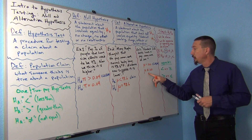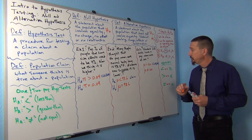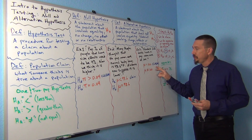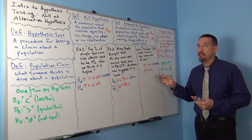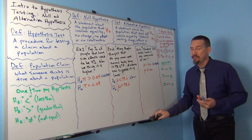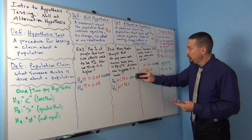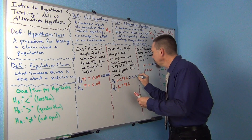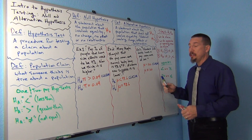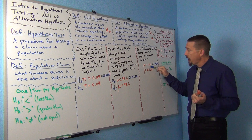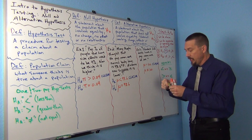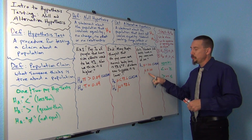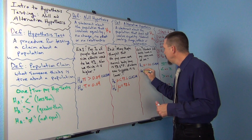Notice I'm not going to say it's greater or less — I'm just going to say it's different, not equal to 100. Remember, claim does not decide what's the null and what's the alternative. Claim is just what the person thinks is true or what they say in the article. The null hypothesis is the one with equal to, so the top one is H0. The bottom one does not have an equal to part, so it would be HA.